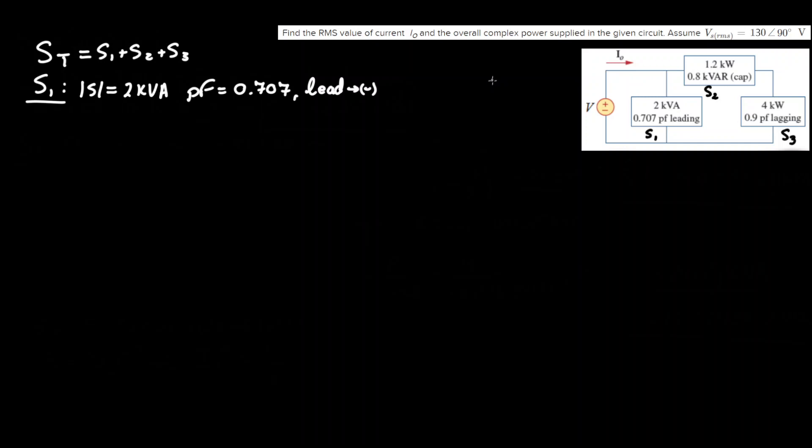And a good way of working with the imaginary and real powers is by drawing this right triangle in which the x-axis is P, the y-axis is Q, P being real, Q being imaginary, and the hypotenuse being the magnitude S with the angle being phi or theta.